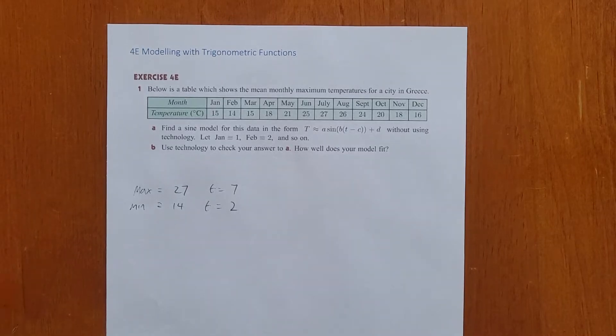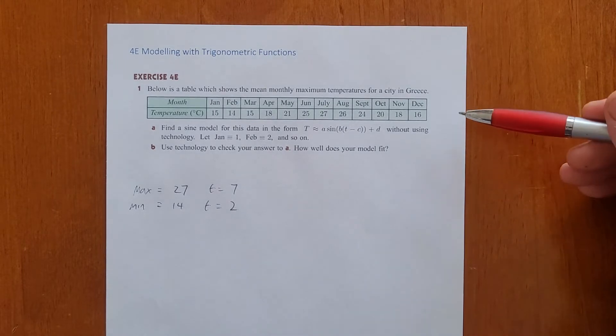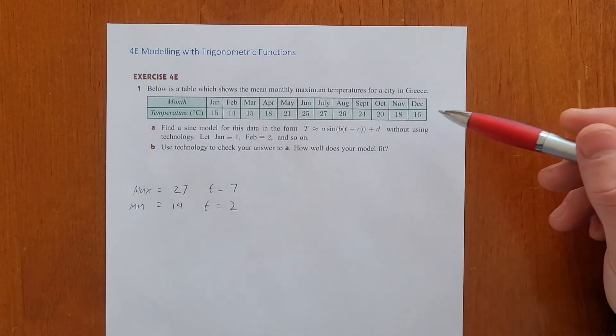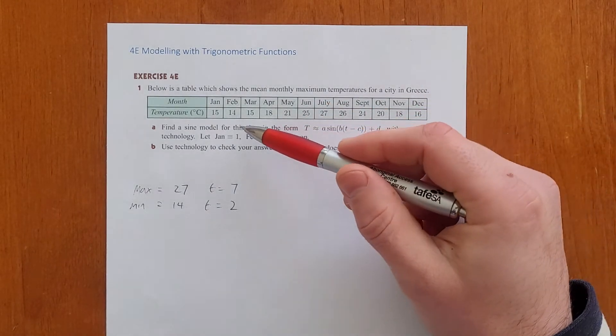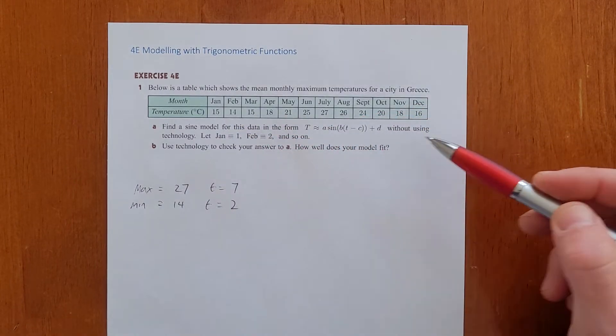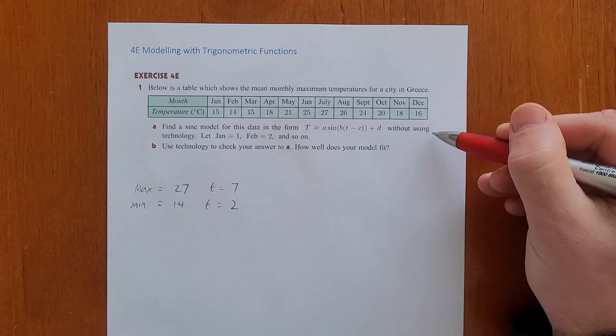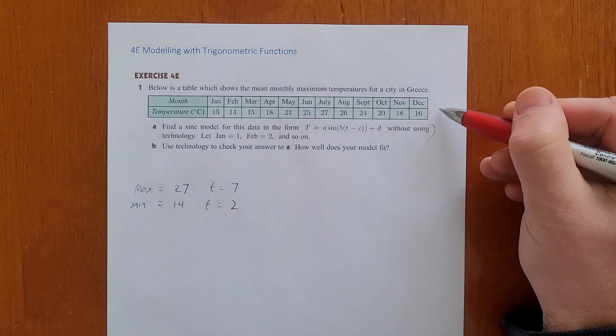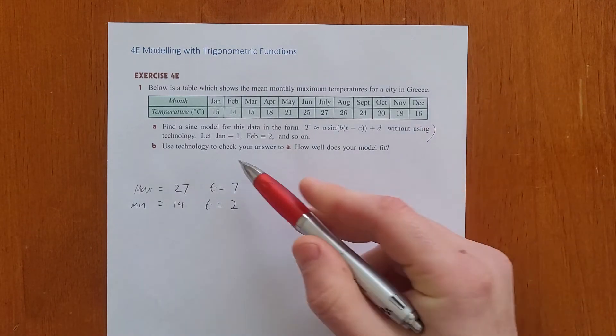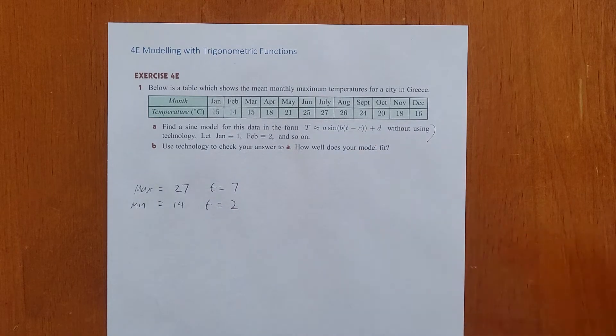Hello everyone, welcome to this video on modelling with trigonometric functions. We have here question one from the textbook with the temperature in Greece per month, the mean temperature in Greece per month. First we're going to do a manual process to find a model that describes this temperature, and then we're going to use our calculators to do it and compare them.